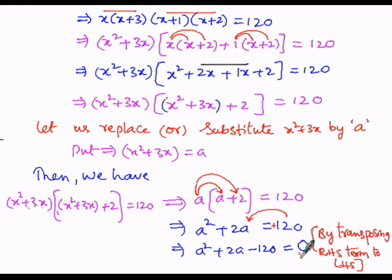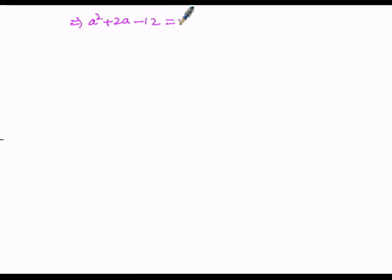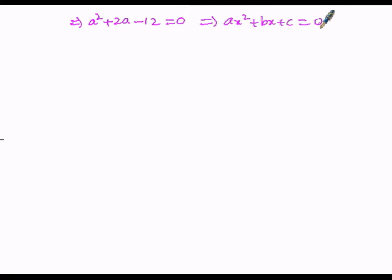We have now framed it in the general form of a quadratic, that is ax² + bx + c = 0. So a² + 2a − 120 = 0, which is in the form of ax² + bx + c = 0. This is the general form of a quadratic equation.